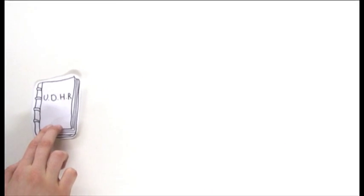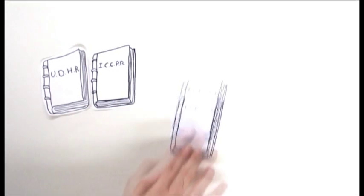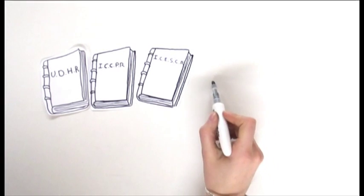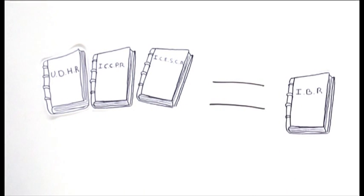The Universal Declaration of Human Rights, the International Covenant on Civil and Political Rights, and the International Covenant on Economic, Social and Cultural Rights. All three of these make up the International Bill of Rights.